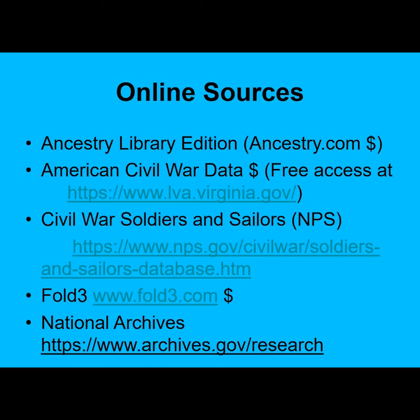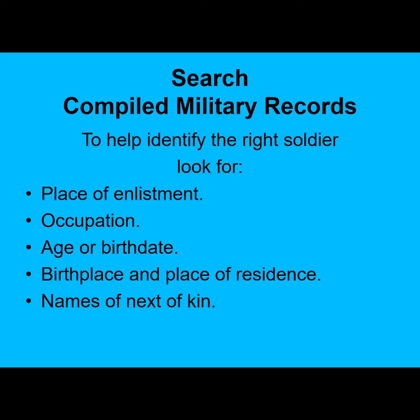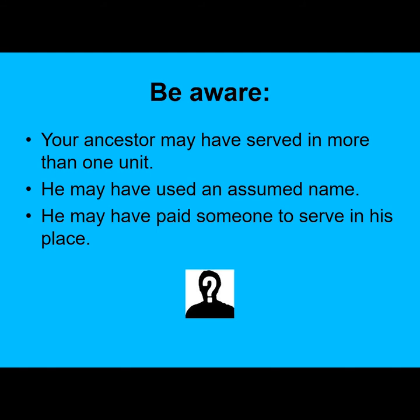Here are important general sources for Civil War data. The National Park Service and the National Archives are free sites that have some basic information. When looking for your ancestor in compiled military records, bits of information from the 1860 census will be helpful, including his occupation, age, birthplace, place of residence, and names of his next of kin. Be aware that your ancestor may have served in more than one unit, may have used an assumed name — hopefully cleared up when he applied for a pension — and he may have paid someone else to serve as a substitute for him.